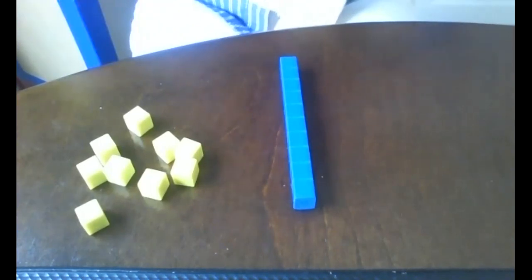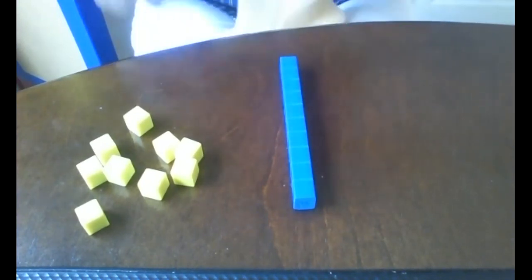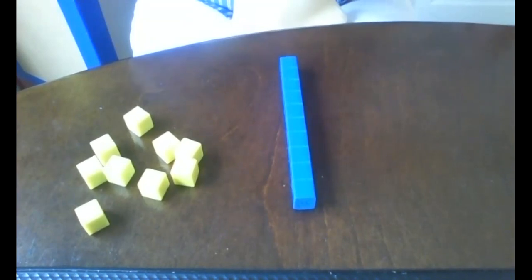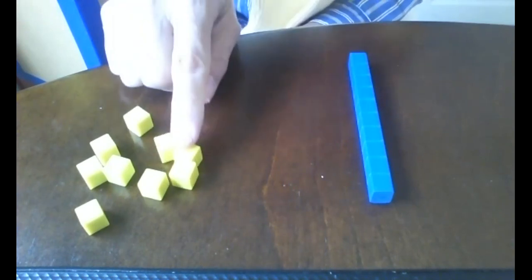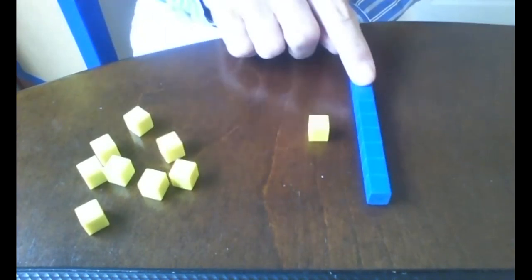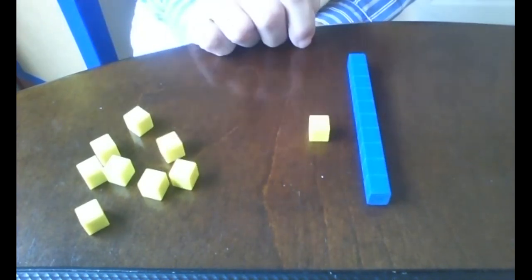So what we're going to talk about is we're going to be talking about how to build our numbers in the teens using our base 10 blocks. So for example, if Mrs. Lucas said, let's see if we can build the number 11. The number 11 would need to have one 10 and one one. 10 plus one more equals 11.